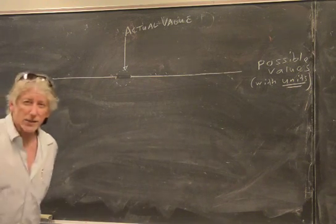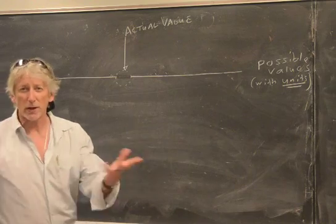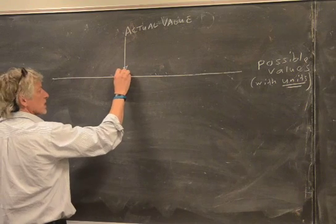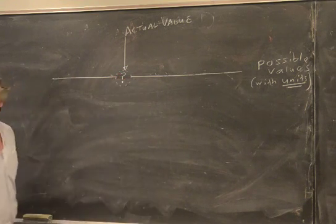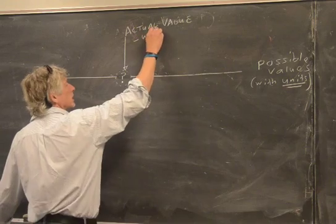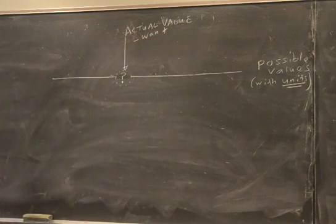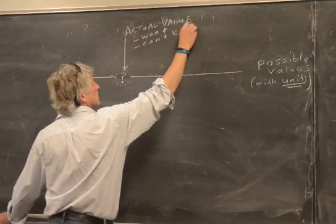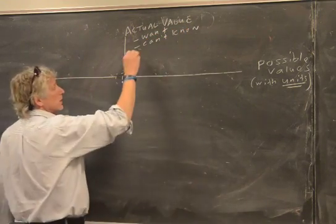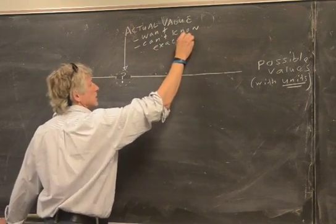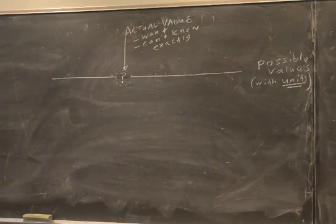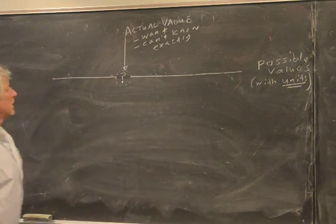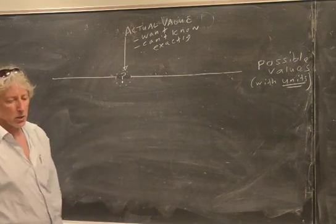But if you know what it is, then why are you taking the measurement? So you don't know what that is — we'll put a question mark. That's what you want. And I've got bad news for you: you can't know it. At least not exactly. So what can you do then? You can take some measurements.